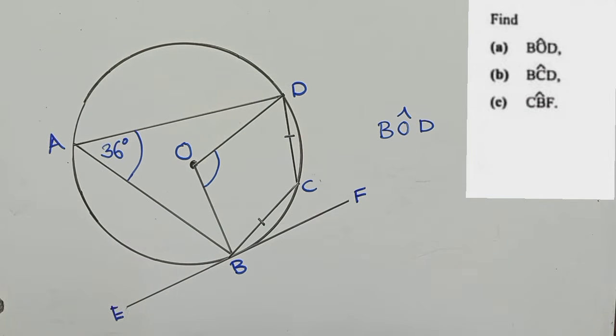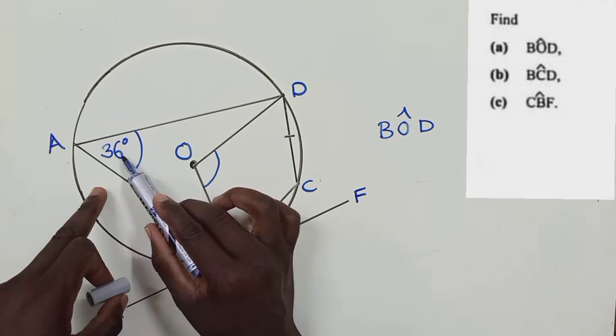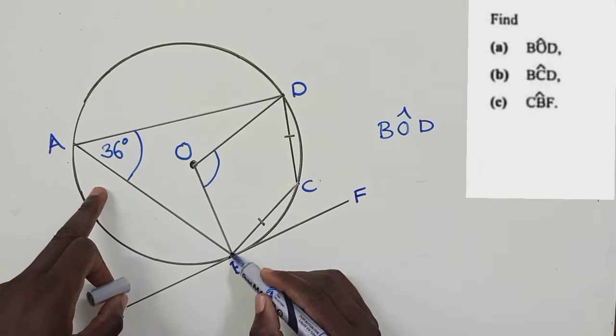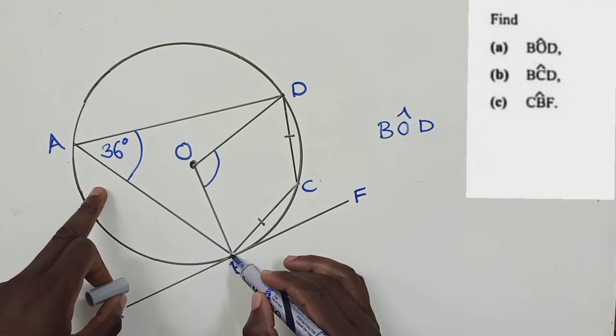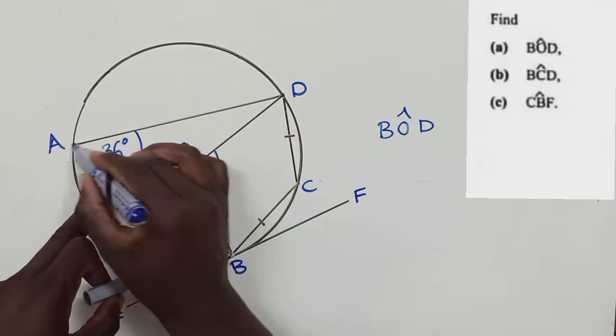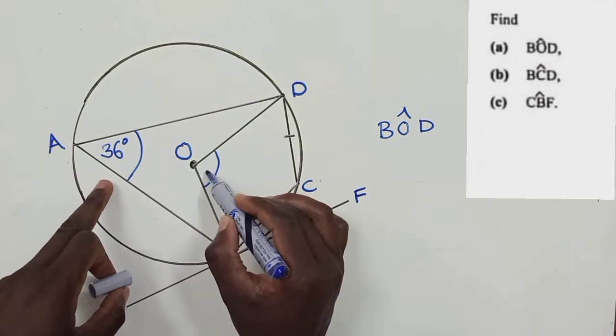So we are going to use the property which says the angle at the center is twice the angle at the circumference, for as long as they are coming from the same arc. So this is the arc right here, and this angle is coming from the same arc as well as the angle which is up here.